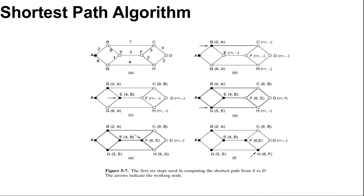We begin our study of routing algorithms with a simple technique for computing optimal paths. The idea is to build a graph of the network with each node representing a router and each area representing a communication line or link.